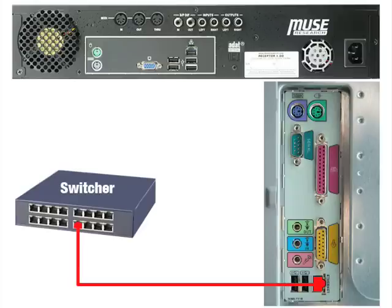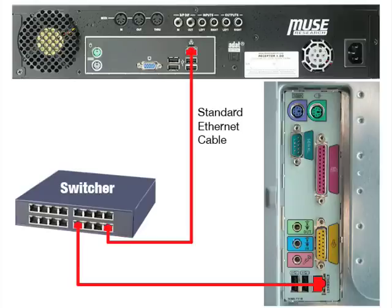Make sure your switcher is turned on and connect one end of your standard Ethernet cable to Receptor and the other end to your switcher. It's essential that you have both ends of this cable connected before proceeding — if you don't, your network won't work properly.